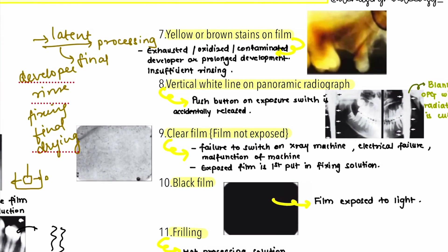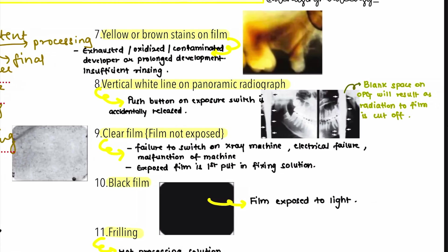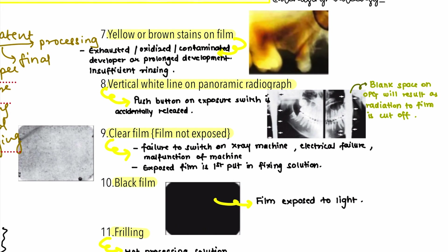The next error is yellow or brown stains on radiographs. These can result from using expired, oxidized, or contaminated solutions, developing for too long, or insufficient rinsing. Always use fresh solutions and maintain proper processing timing. For the final wash, rinse the film for at least 15 to 20 seconds directly under tap water to remove excessive solution and prevent staining.